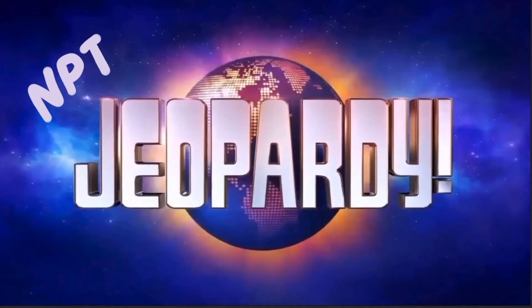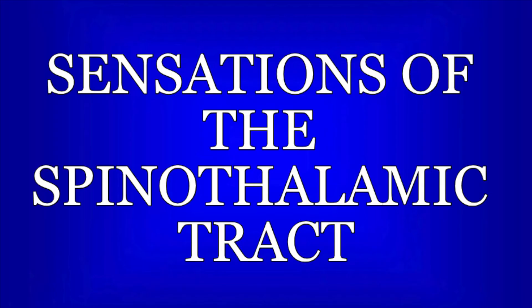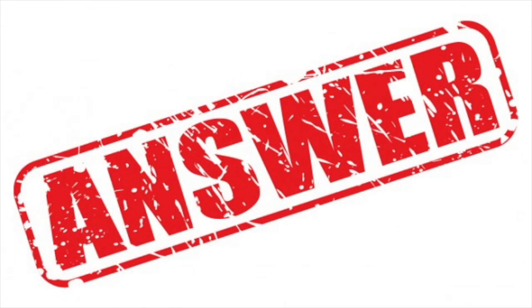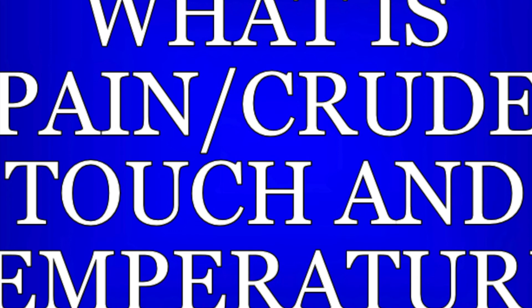Now it's time for NPTE Jeopardy! Pause the video now if you want time to read and think about the question. Otherwise, you've got 5, 4, 3, 2, 1. Crude touch can be measured by sharp-dull discrimination, and temperature can be measured by cool or warm vials of water placed against the skin. Both are part of the lateral and anterior spinothalamic tract sensory input. Hopefully that covers all of our bases.